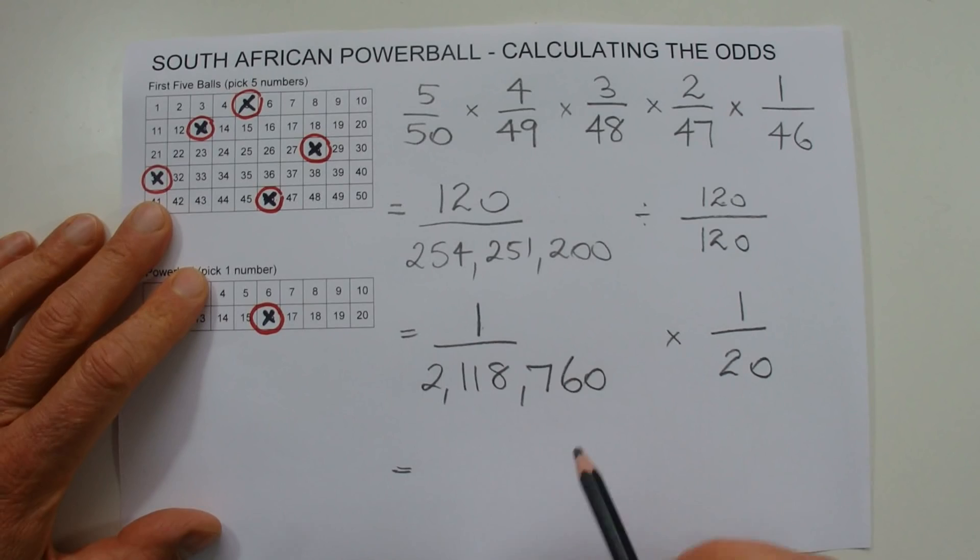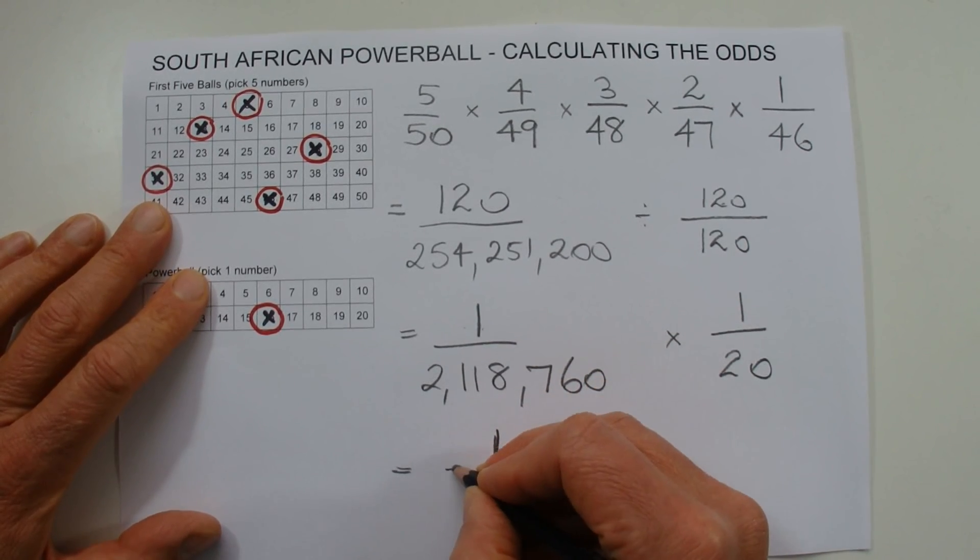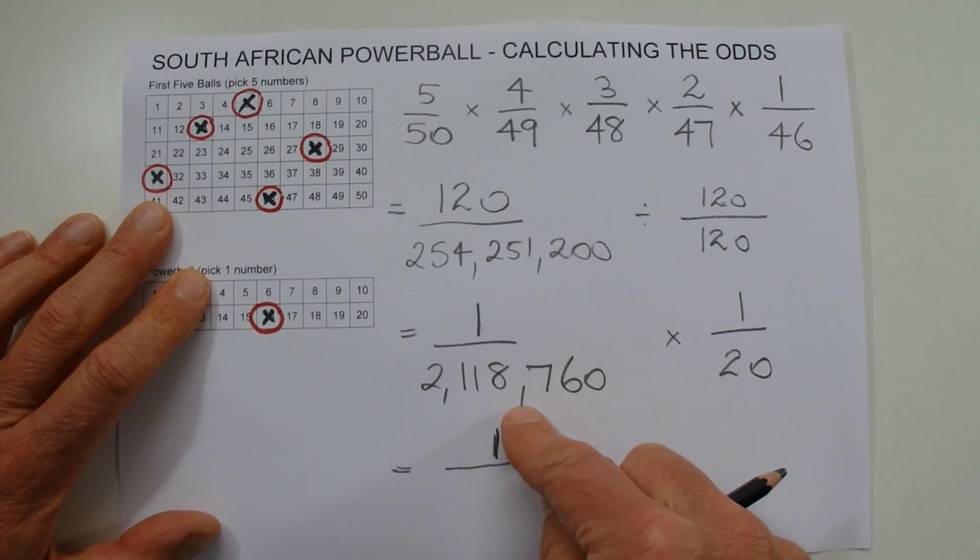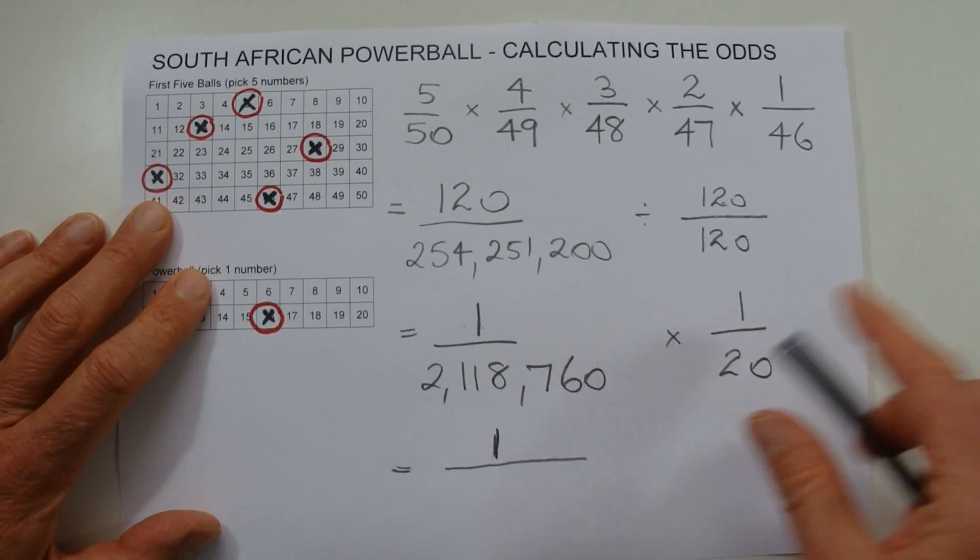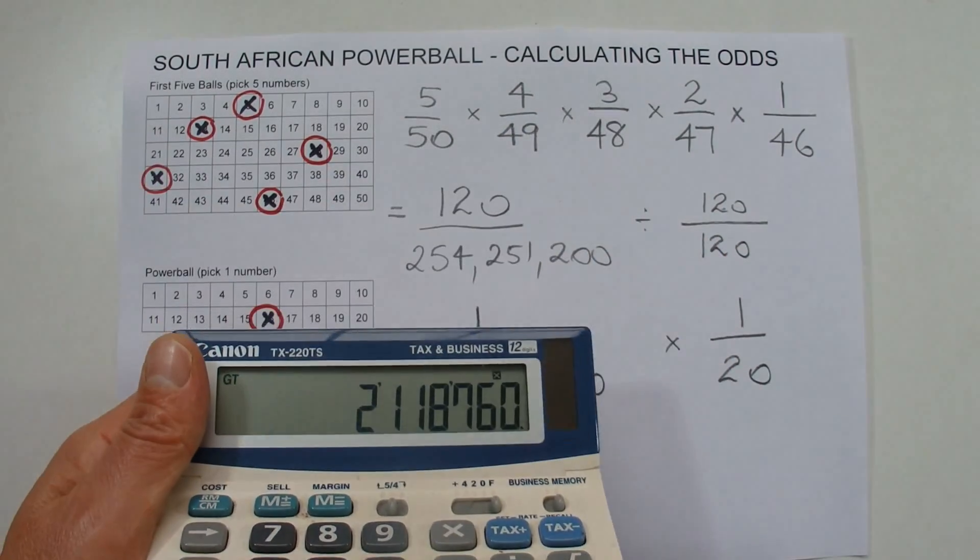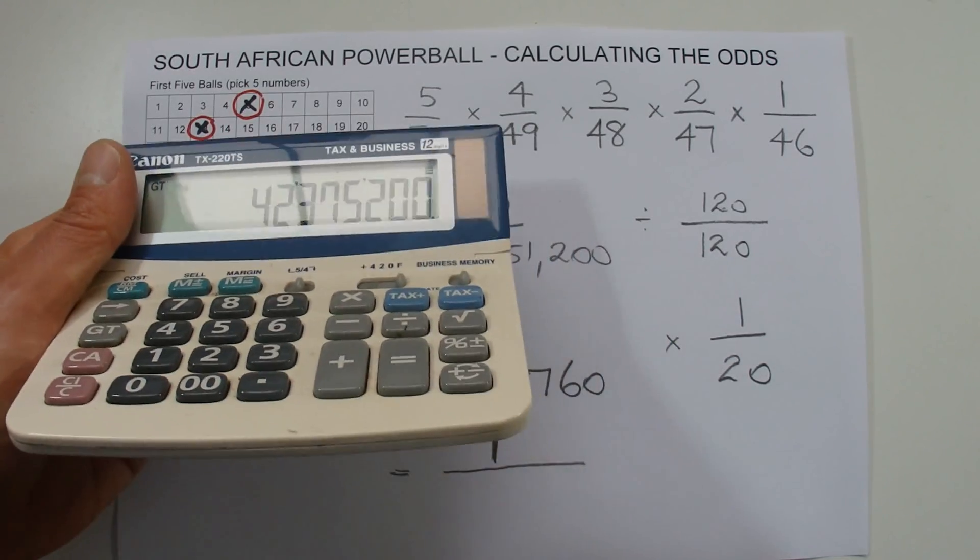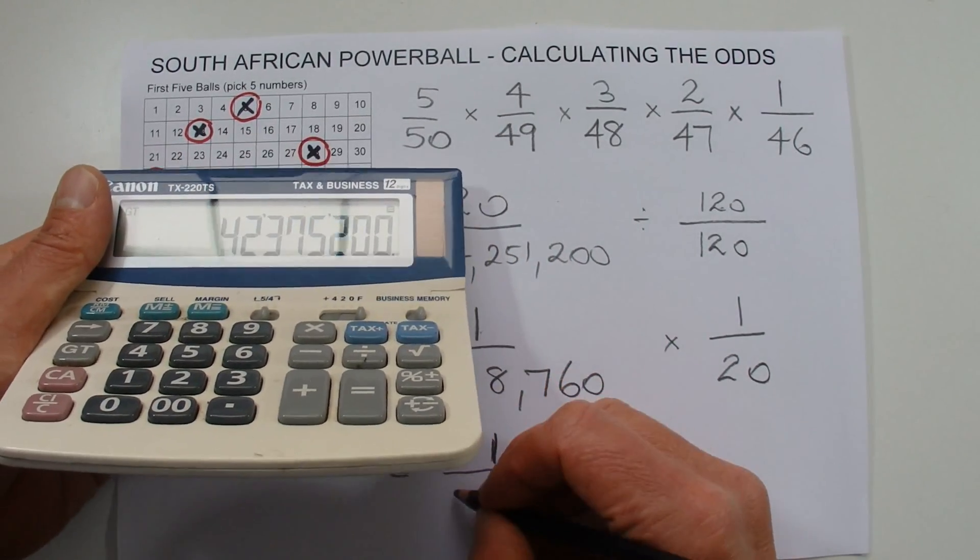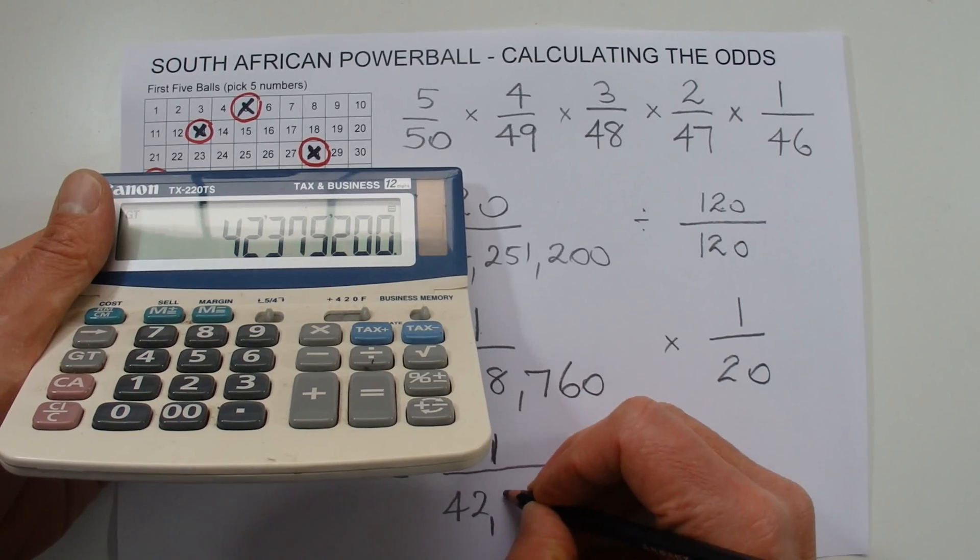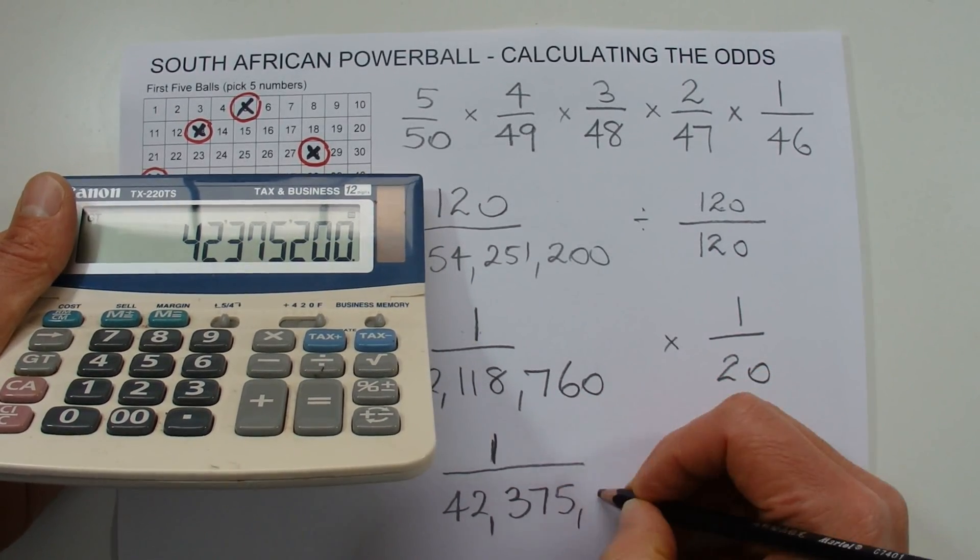And all we need to do now to find the odds is multiply the one times the one, and then we multiply the 2,118,760 by 20. And that's already in my calculator. Multiply that by 20, and there we go. That's one chance in 42,375,200.